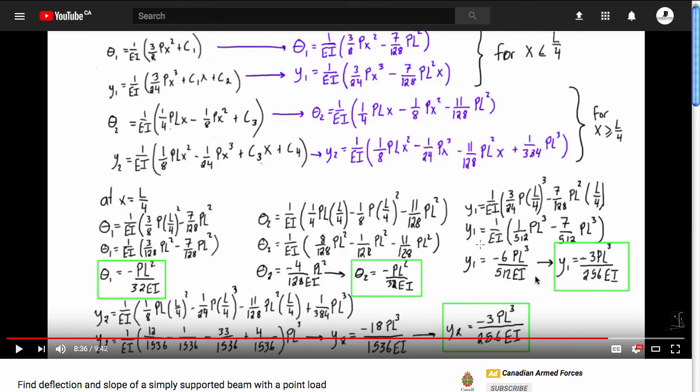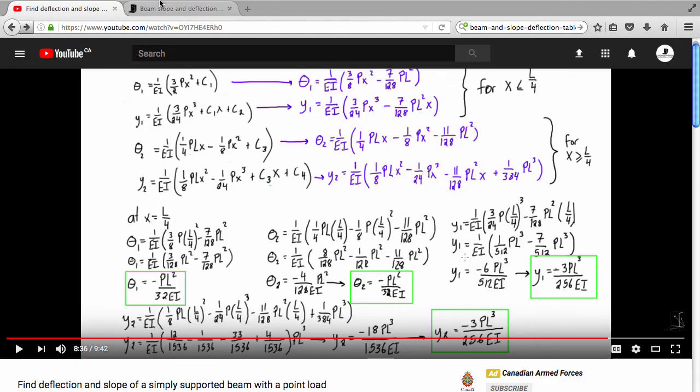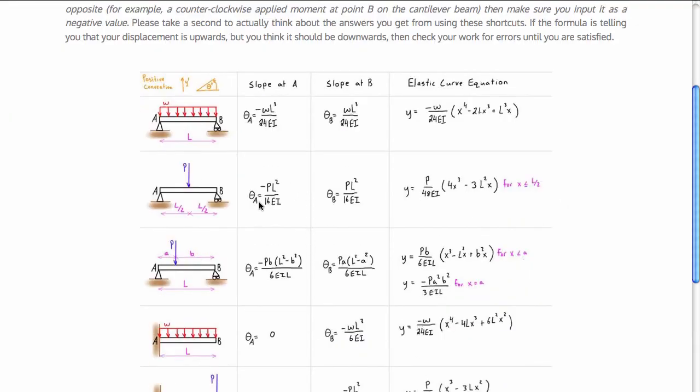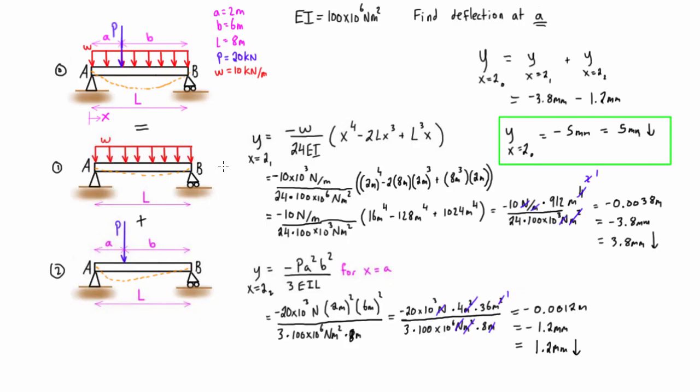So if you're given the opportunity to use a table method like I did in this video, then definitely go for it. It's way faster. And even imagine if we were doing the double integration method with the distributed load here added on as well, it's just going to be that much more annoying and hard to do.